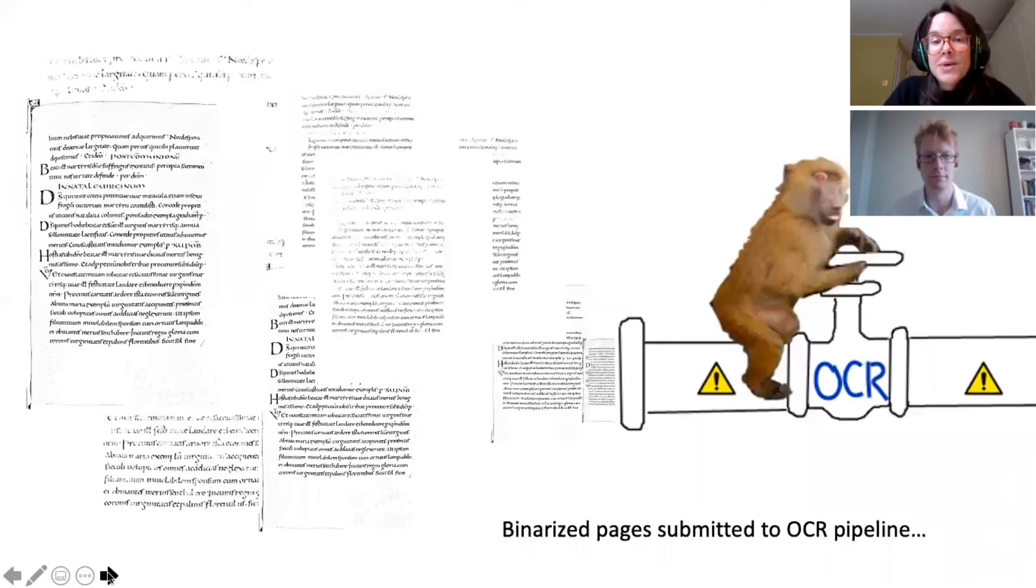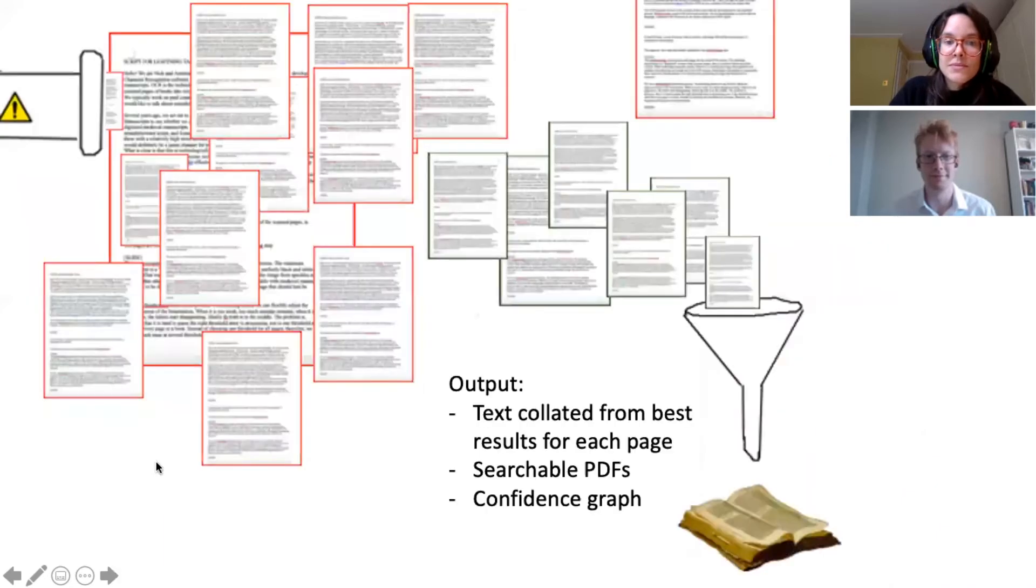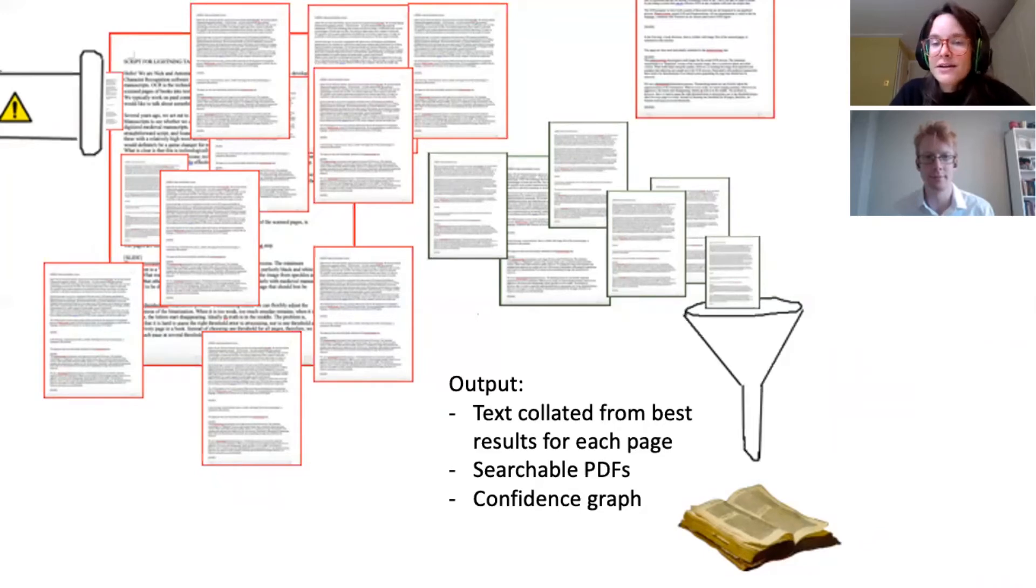In the next step, all the binarized pages are submitted to the OCR process. After the OCR is done, the best result is automatically picked for each page to then make up the whole book again. The final output of our pipeline is one HOCR file for each page, a searchable PDF, and a confidence graph that tracks the quality across the whole book.